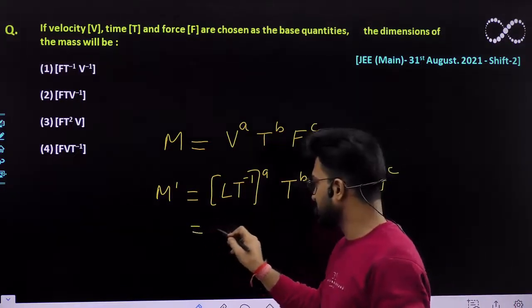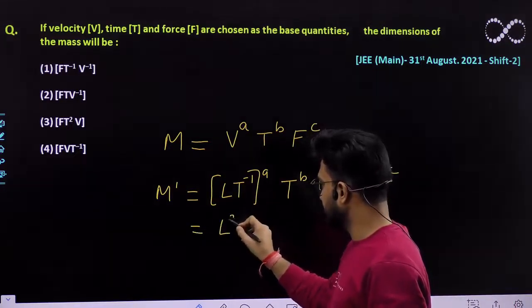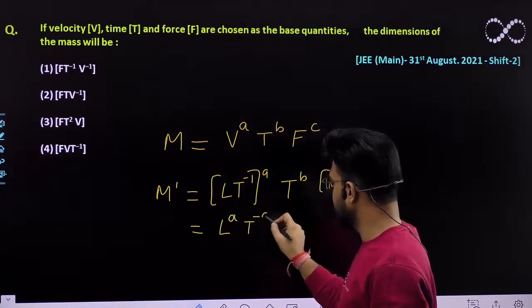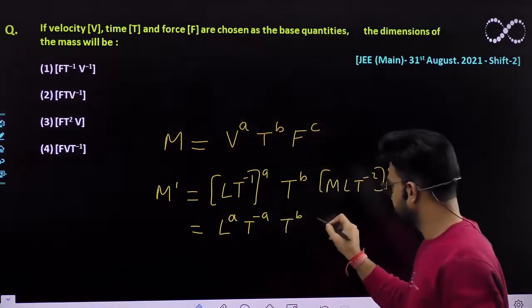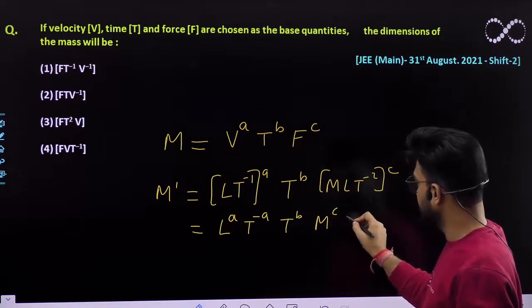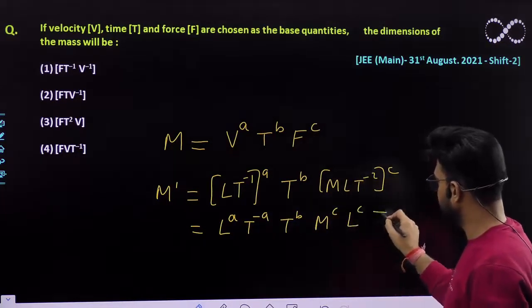So now we will be equating it. We will be getting L^a T^-a T^b M^c L^c T^-2c.